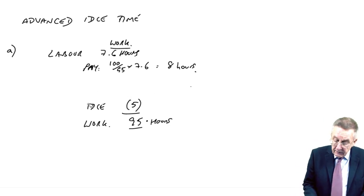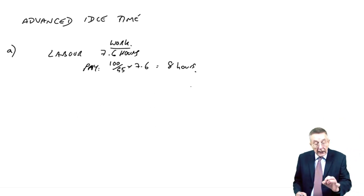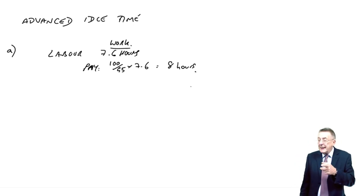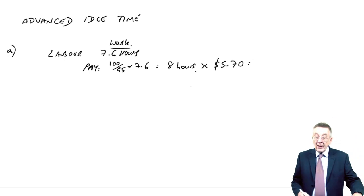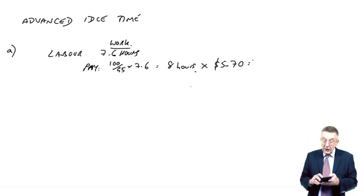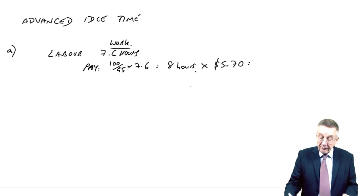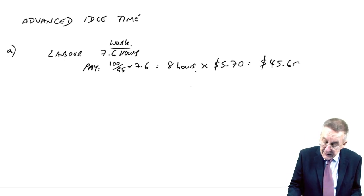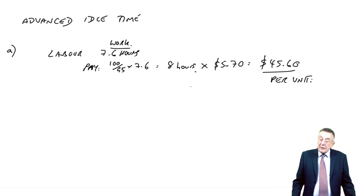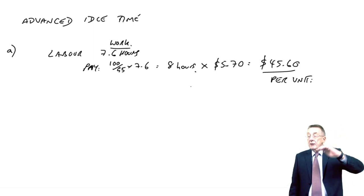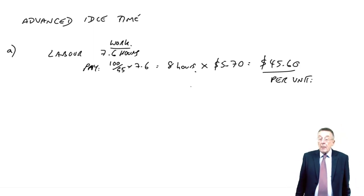Well, we have to pay them 100 hours for every 95 they work. And so, you'll have to pay them for 100 over 95 times 7.6. We'll actually be paying them for 8 hours. Now, think about that for a minute. You see, we'll pay them for 8 hours. They'll be idle 5% of the time. 5% of 8 is 0.4 hours. We'll be left with 7.6 hours where they're actually working. So, every unit we make, they will work 7.6 hours. But how much will we have to pay? We'll have to pay for 8 hours. And how much do we pay them per hour? $5.70. So, in fact, the labour cost per unit is $45.60 per unit.